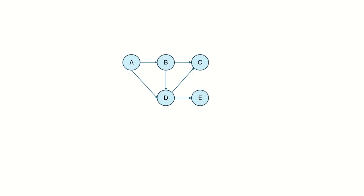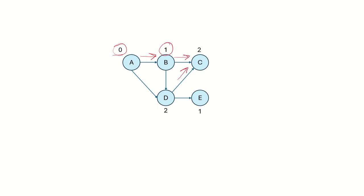Let's take an example graph and see how we can find topological sorting using the in-degree of the nodes. We begin by computing the in-degree of each node. Since A has no incoming edges its in-degree is 0, B has one incoming edge so its in-degree is 1, C has two incoming edges so its in-degree is 2, and so on.